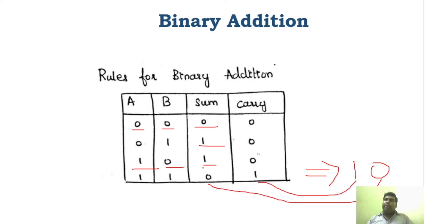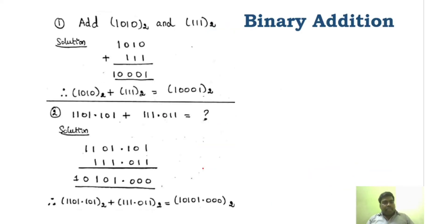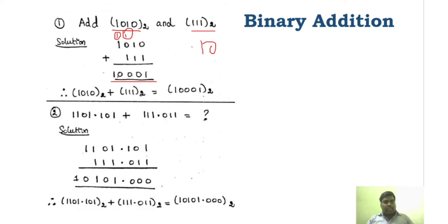We will apply the same rule to problems. You can see two numbers given: 1010 and 111. We are going to add these numbers. So 0 plus 1 is 1; 1 plus 1 is 0 and carry 1; then 1 plus 1 is 0 again and carry 1; and finally 1 plus 1 is 10 — that is 1, 0. There is no other number so I am directly writing 10 here.